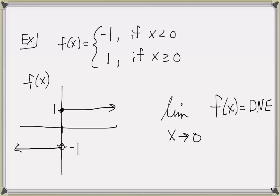But this function does have one-sided limits at 0. Let's first consider the function as x approaches 0 from the right. So 0 is right on the y-axis. As x approaches 0 from the right, we look at the values of f of x. Well, f of x is constant to the right of 0, and if you trace along the function, you see that it is getting closer and closer to height positive 1. So we call the right-hand limit of f of x as x approaches 0 equal to 1.